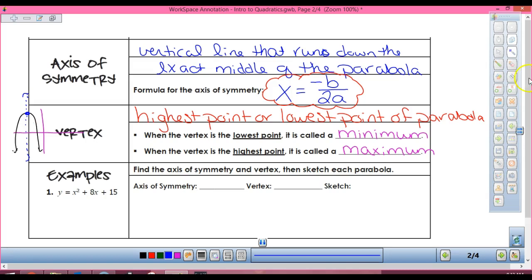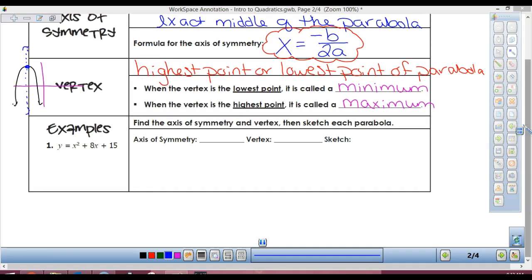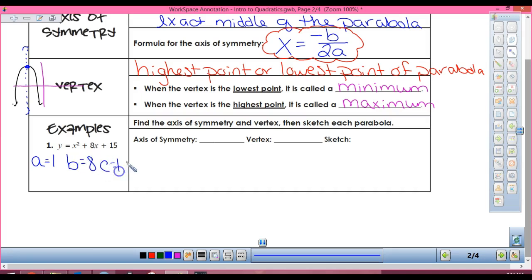Alright, so let's practice sketching a few of these. So the first thing that we always have to do is find our axis of symmetry. So what I like to do on these is I like to identify my A and my B and my C. So number one, what's my A? They're always numbers. A, B, and C are always numbers. A is 1, B is 8, and C is 15.